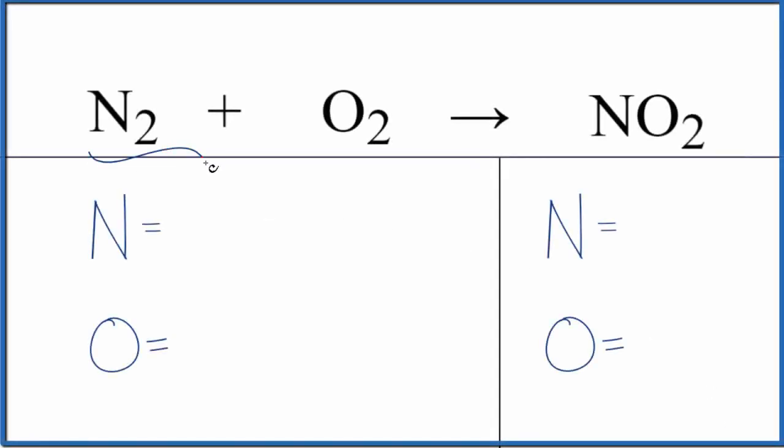Let's balance the equation for N2 plus O2. We have nitrogen gas and oxygen gas here. We'll also look at the type of reaction and write the states. Let's look at the type of reaction first. We have two